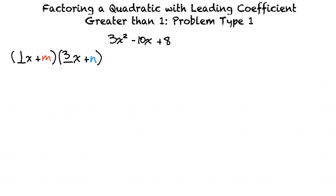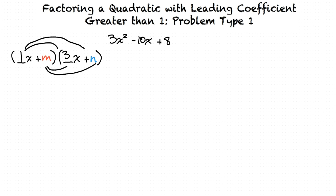How are we going to find m and n? The first thing we should do is multiply these factors out using the FOIL method. We multiply the first terms, the outer terms, the inner terms, and the last terms. So we first multiply the first terms together: 1x times 3x equals 3x squared. Then we multiply 1x times n to get xn. Then we multiply m times 3x to get 3mx. Then we multiply m and n, so we have mn.